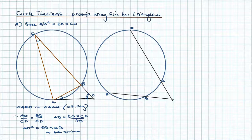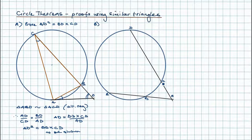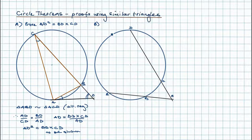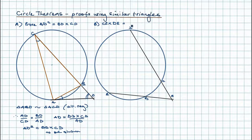Let's label up the points on the circumference A, B, C, D, and the point where the secants intersect as E. The secant-secant theorem is very similar to the tangent-secant theorem. This time we say the segment on the outside times the whole of the secant equals the outside times the whole of the other secant. So CE times DE equals BE times AE.